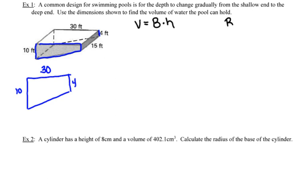Its area, or capital B, is going to be equal to half the sum of the two bases times the height of the prism.